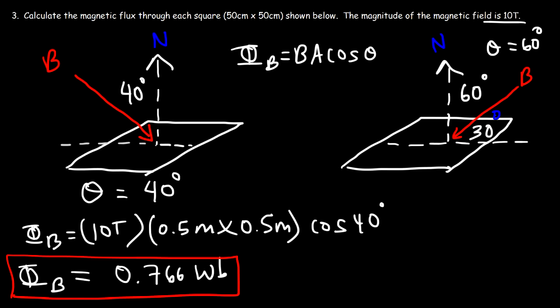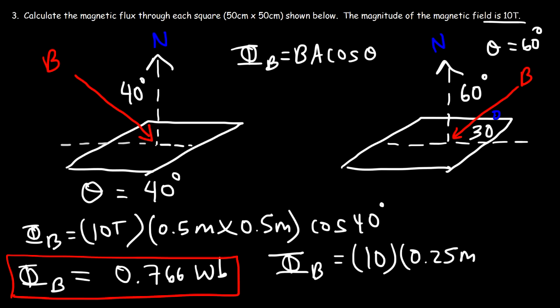Now for the second square: using the same formula, B is still 10 tesla, the area is still 0.5 times 0.5, which is 0.25 square meters, but this time we use cosine of 60 degrees instead of cosine of 30 degrees. Cosine of 60 is one-half; one-half times 0.25 is 0.125, and times 10 gives a magnetic flux of 1.25 webers, or tesla times square meters.